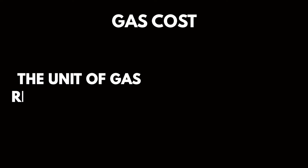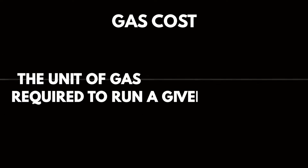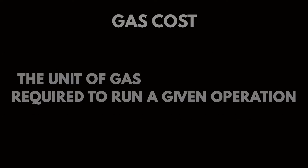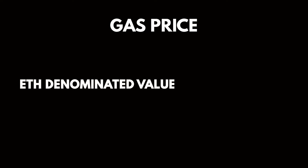Gas cost represents the unit of gas required to run a given operation. Gas price refers to the ETH-denominated value of a unit of gas. Gas limit is the maximum amount of gas that the sender of a transaction is willing to spend.